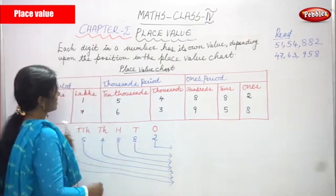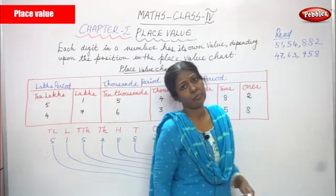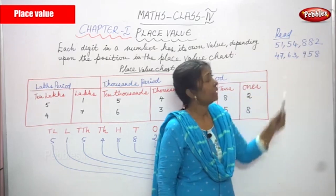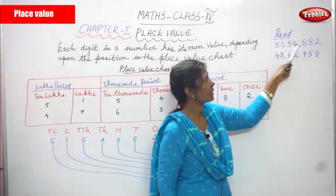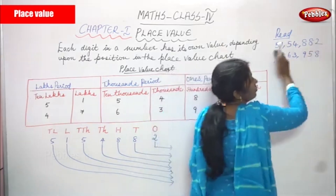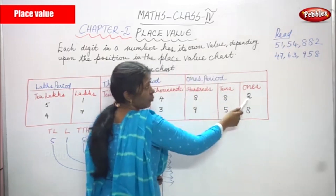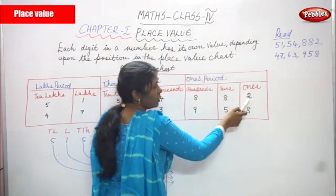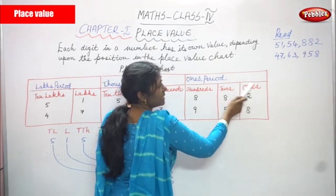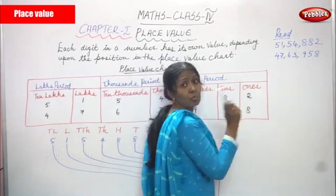The first number I have given is 51 lakhs 54,882. We have to start from the right side. So, ones — what is in the ones place? Two. The position of two in the place value chart is ones.